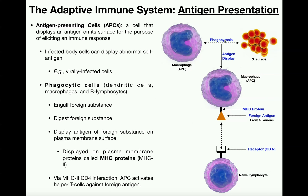After they induce phagocytosis, they then display this antigen from Staphylococcus aureus on their plasma membrane. It's displayed through a protein called an MHC protein — we'll have a separate video going into that in more detail. But for now, they display this antigen from that specific pathogen on their plasma membrane.